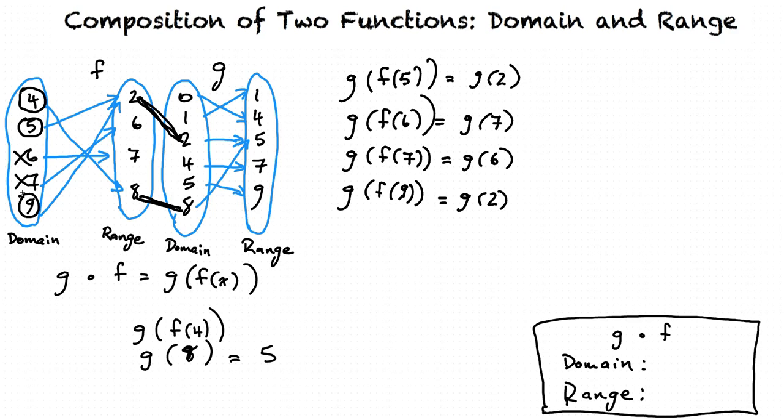So our domain of g of f will be the original x values that we plugged into f of x. We're writing it in set notation for our answer. The domain of g of f: 4, 5, 9. And that's the final domain.